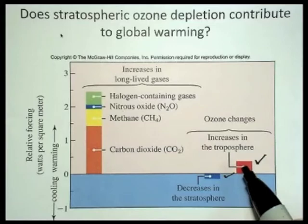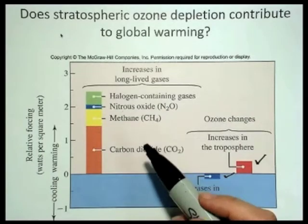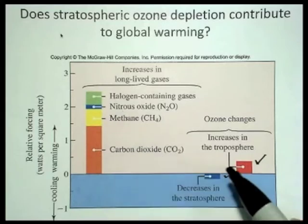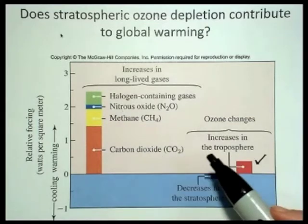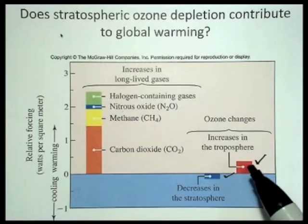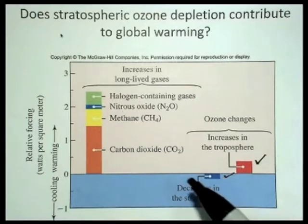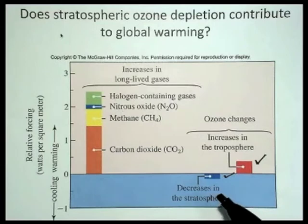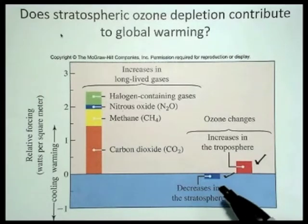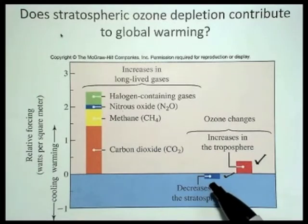Tropospheric ozone has a very small factor contributing to global warming. More ozone does absorb infrared radiation, but it's a pretty small factor. And the decrease of ozone in the stratosphere actually has a cooling effect, because there's less ozone there to absorb infrared radiation. So the hole in the ozone layer has nothing to do with warming up the Earth — it would actually serve to cool the Earth. A decrease in stratospheric ozone would cause a cooling effect because there would be less ozone to absorb infrared radiation.